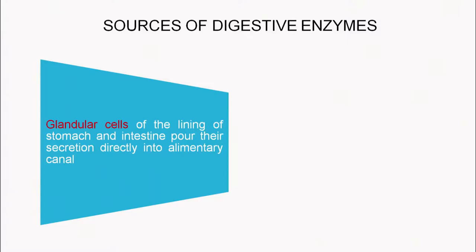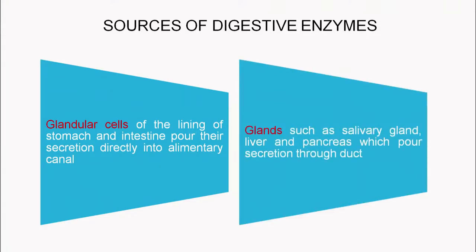Moving on to the cells that secrete enzymes for digestion: glandular cells are present on the lining of the stomach and intestine and pour their secretions directly into the alimentary canal. Certain glands also help in digestion — namely the salivary glands, liver and pancreas — which pour their secretions through a duct into the alimentary canal.